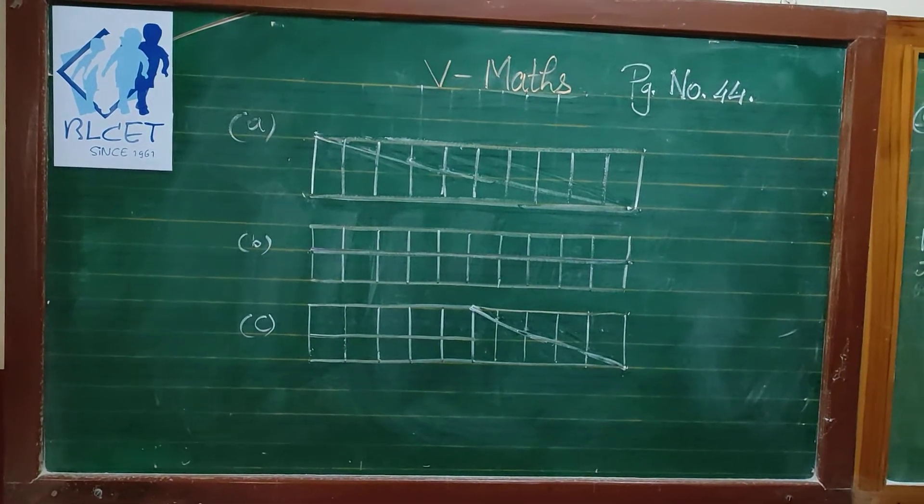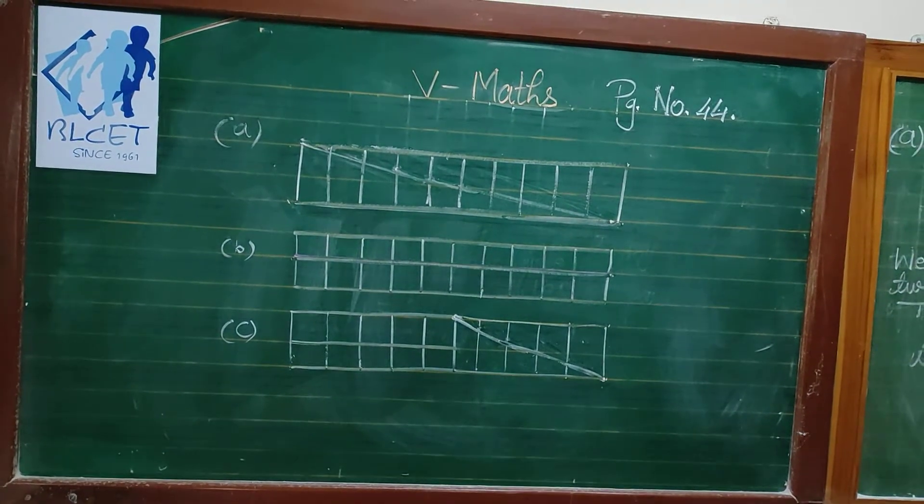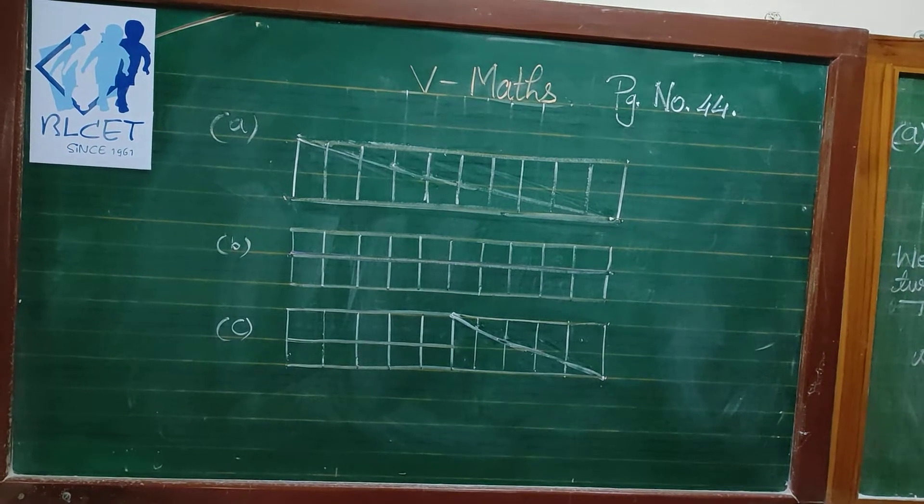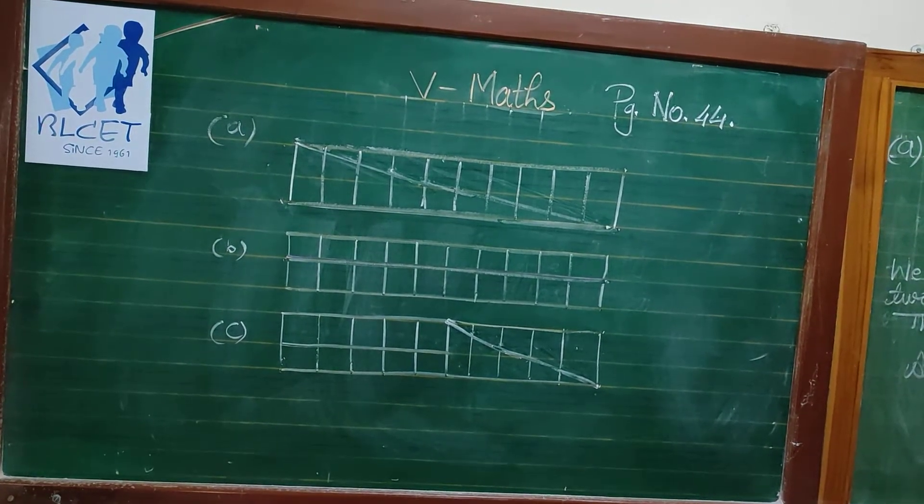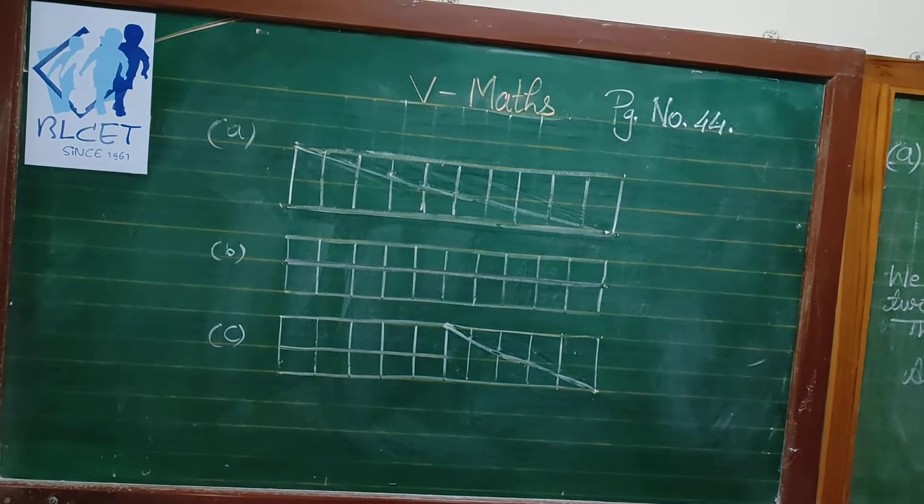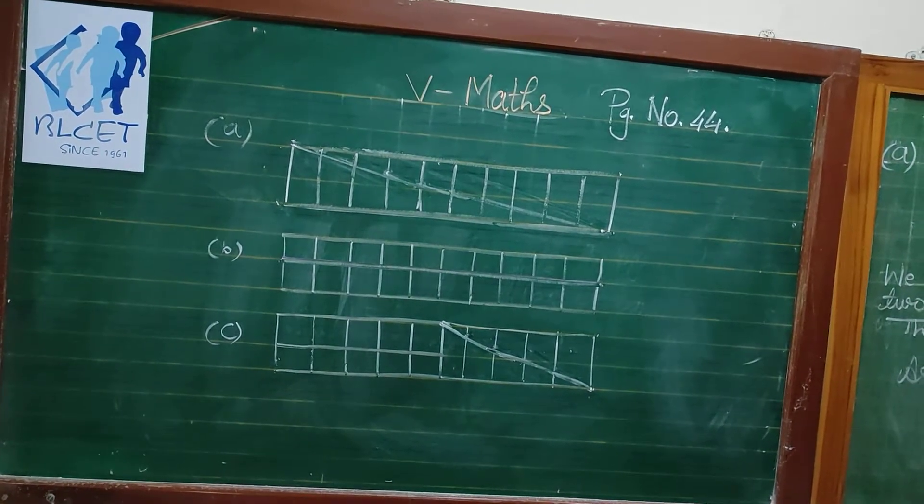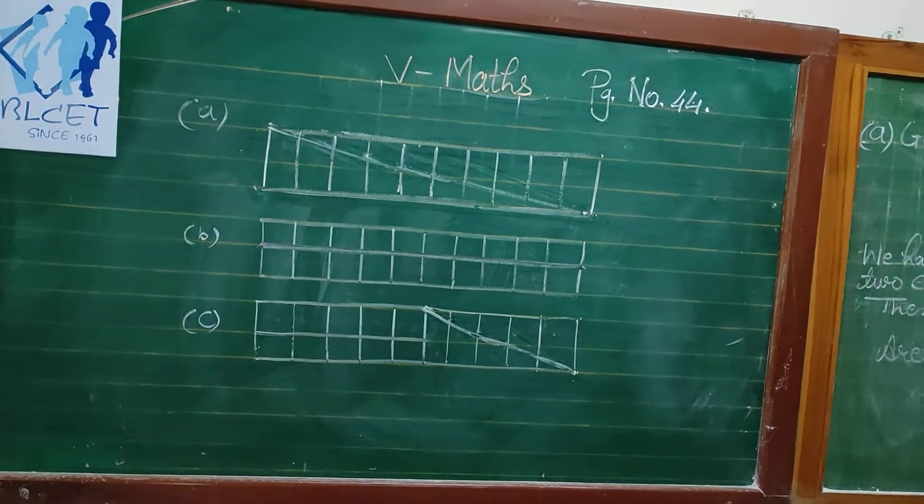Now let us start from page number 4. Here is a rectangle of area 20 square centimeters. You can see in the textbook, draw one straight line in this rectangle to divide it into equal triangles. So what is the area of each of the triangles? Let us start.